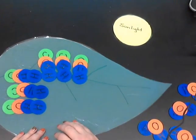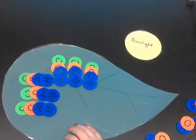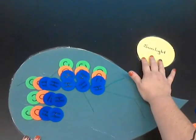In the space in your packet, draw a model of what is remaining in the leaf. Please make sure that your model is labeled.